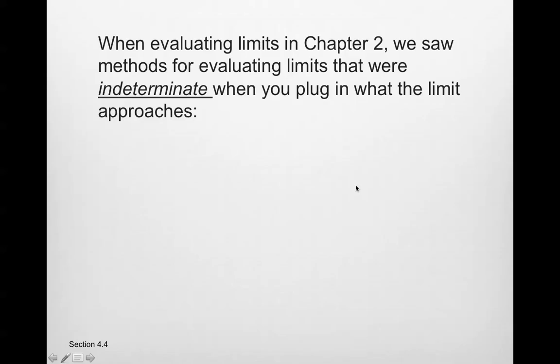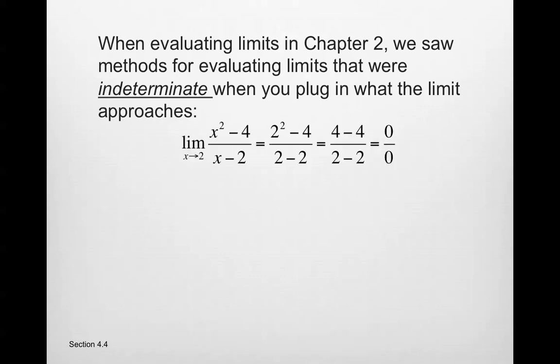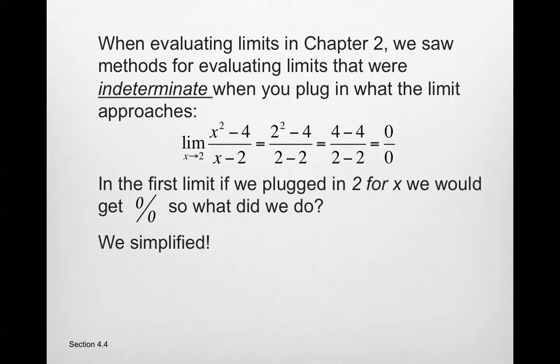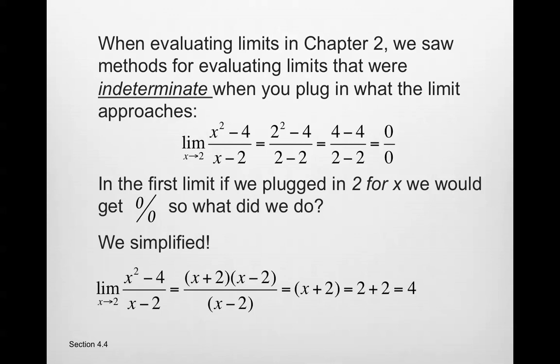When evaluating limits in Chapter 2, we saw methods for evaluating limits that were indeterminate. For example, the limit of (x² − 4)/(x − 2) as x approaches 2. When we plug in 2, we get 0 over 0. What we did in that case is simplify the top: x² − 4 factors as (x + 2)(x − 2), we cancel the (x − 2)'s, leaving x + 2, and plugging in gives 4.